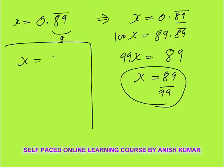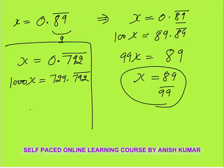Similarly, if x equals 0.792 bar — all three digits repeating — there are no non-repeating digits. Shift all three to the left of decimal by multiplying by 1000. So 1000x equals 792.792 bar. Subtracting x: 999x equals 792. Therefore x equals 792 by 999.